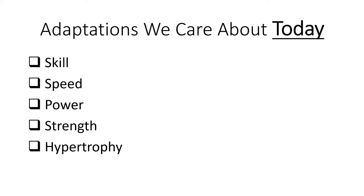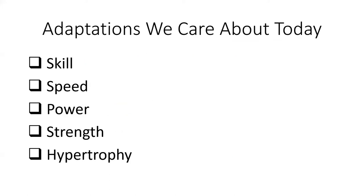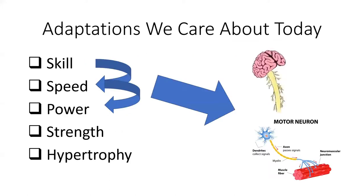Here are the adaptations we're really going to focus on: skill, speed, power, strength, and hypertrophy. Skill is movement technique. Speed is movement velocity. Power is applying a force at a specific velocity. Strength is applying high levels of force, and hypertrophy is increasing muscle mass. Skill, speed, and power come from the neurological system influencing the muscular system — these are more neuromuscular adaptations that are more dependent on the neurological system.